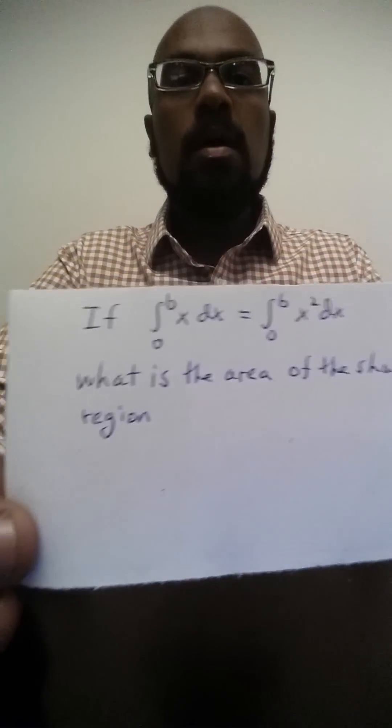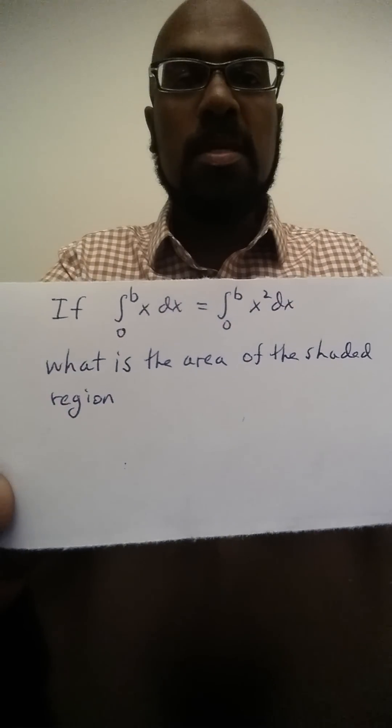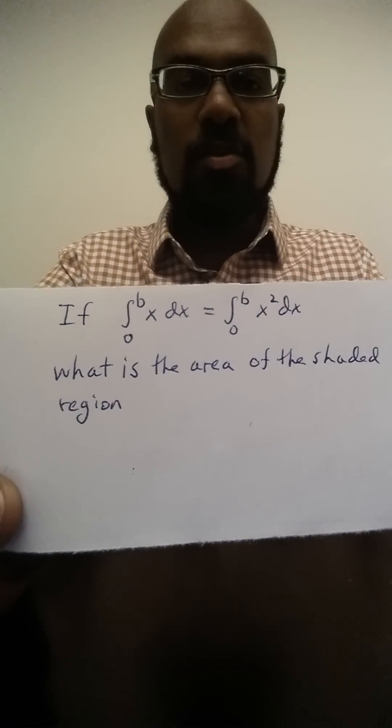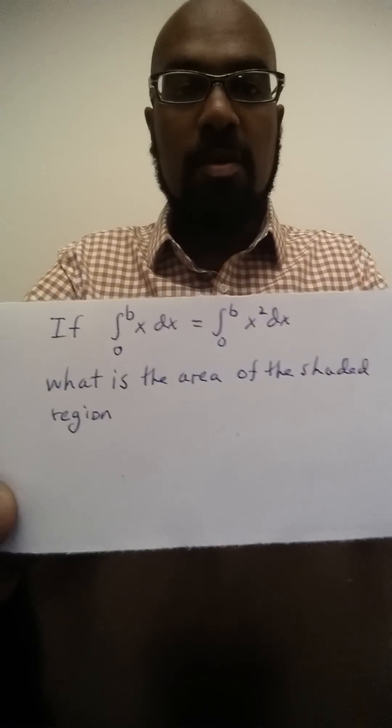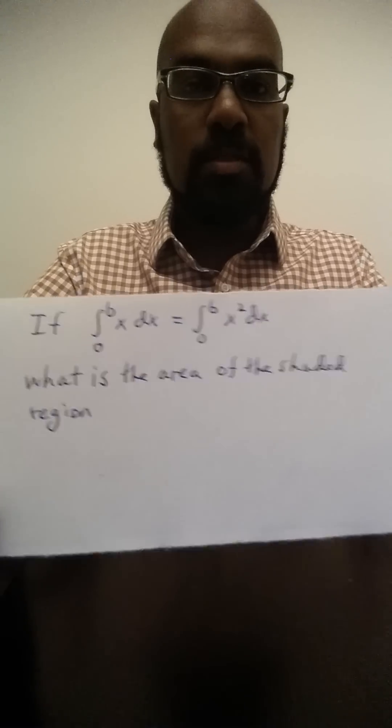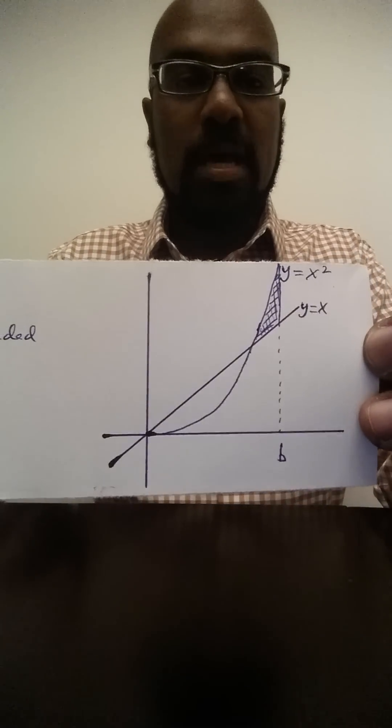Today's problem is from a practice test. If the integral from 0 to b of x dx equals the integral from 0 to b of x squared dx, what is the area of the shaded region in this picture right here?